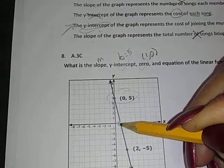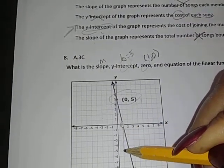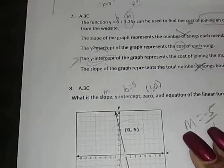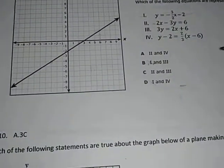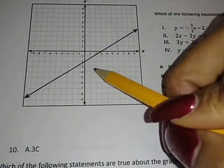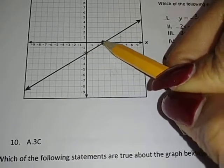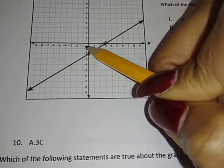Go down 1, 2, 3, 4, 5 to the right 1. So M is negative 5. I see that I need to find the slope. Well, here is the y-intercept and the x-intercept. So up 2 to the right 3, and that's 2/3.